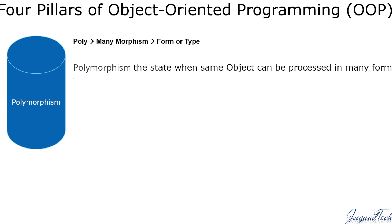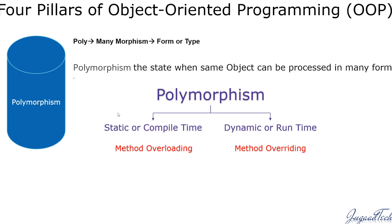If we see from the real world, the same person can do driving and cooking — that is actually part of the polymorphism concept. Now, polymorphism is divided into two parts: first is static or compile-time polymorphism, and the other is dynamic or runtime polymorphism. Compile time is also called method overloading, and runtime is called method overriding.